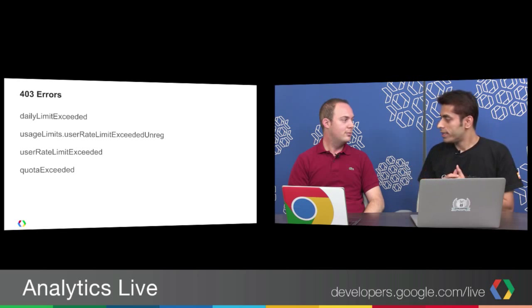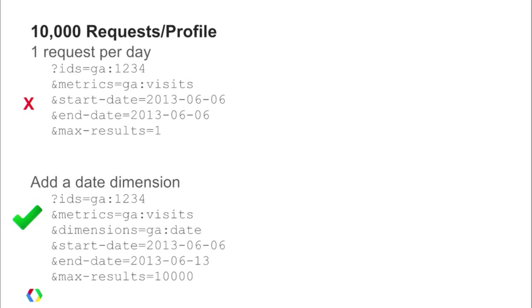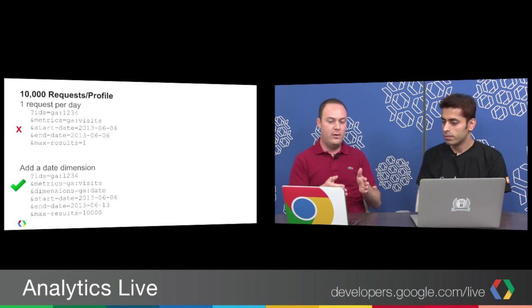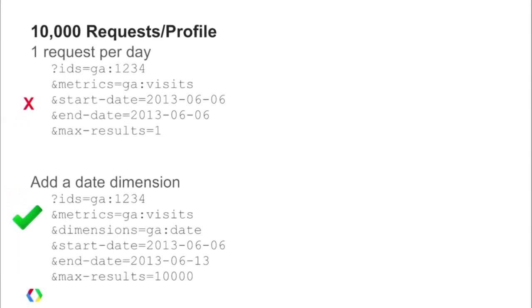If you cannot use OAuth 2, you can use an API key with the key parameter to pass your API key. There's also 'concurrent quota exceeded' — again, the idea is to just slow down and wait for the first round of requests to finish. The 10,000 requests per profile is a common request we get for increases, and typically this quota meets the needs of about 100% of people — but we do see a common pattern for why they're hitting this limit.